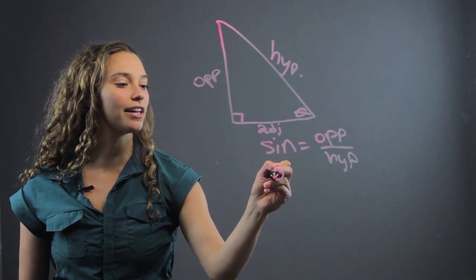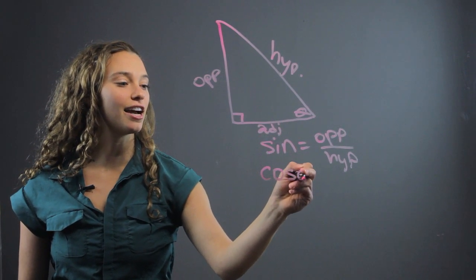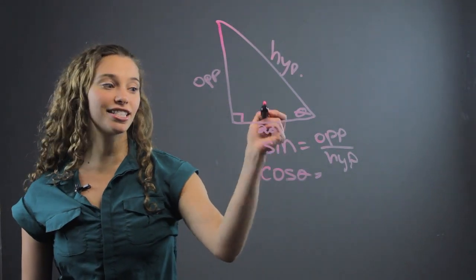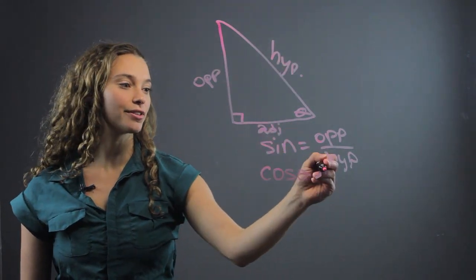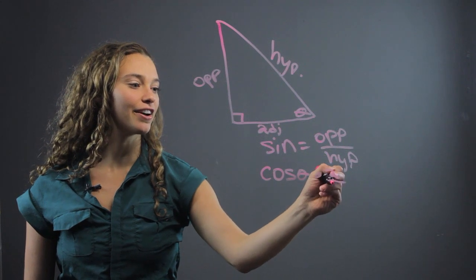Now for cosine of theta, you find the adjacent over the hypotenuse. I'll just write a over h.